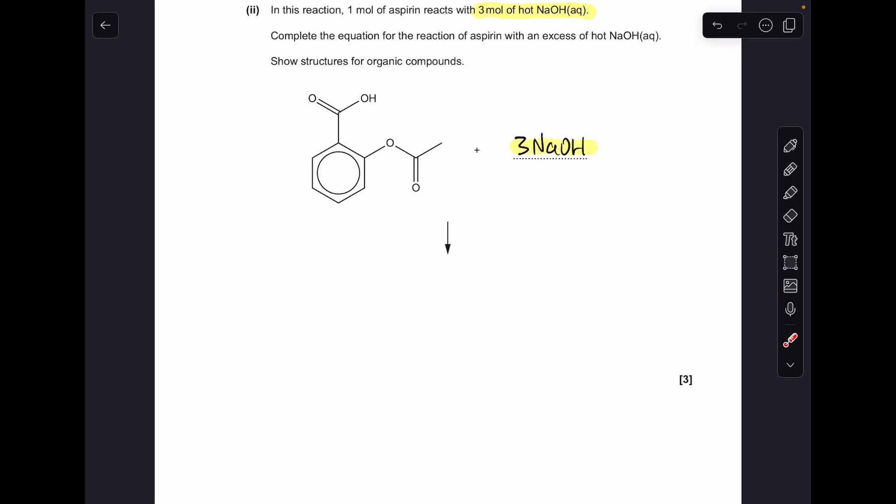Moving on to the last part, this equation for the action of aspirin with excess sodium hydroxide. You'll notice I've already put three moles of NaOH into the equation because of what we're told in that first line. First thing to think about here is what functional groups we've got in aspirin. So we've got a carboxylic acid group and we've got an ester group. The carboxylic acid can definitely react with sodium hydroxide and we'll get this sodium salt of that.